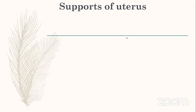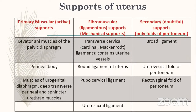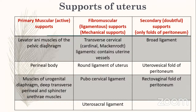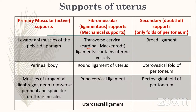Supports of the uterus: primary (active) supports are levator ani muscles, perineal body, and muscles of the urogenital diaphragm. Fibromuscular (mechanical) supports include transverse cervical (cardinal/Mackenrodt's) ligament, round ligament, pubocervical ligament, and uterosacral ligament. Secondary (doubtful) supports are peritoneal folds: broad ligament, uterovesical fold, and rectovaginal fold (pouch of Douglas).